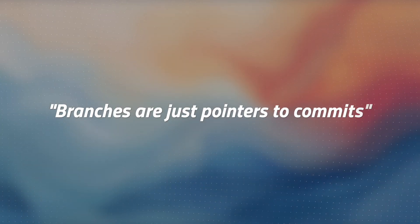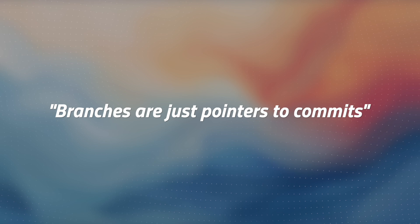If you're a Git user, you've probably come across this perplexing saying at one point or another in your life: 'Branches are just pointers to commits.' But what the heck does that mean? Branches are these long chains of commits, so how can something like that be represented by a single pointer? Well, it comes down to just one clever design decision and the surprisingly intuitive way that Git utilizes it.